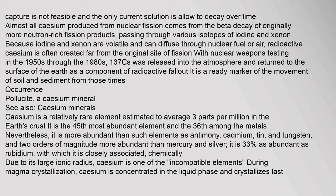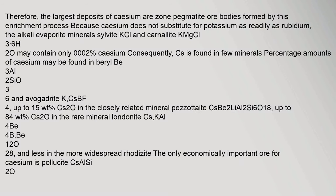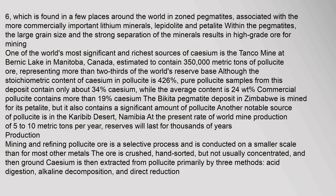Caesium is a relatively rare element. The largest deposits of caesium are in zoned pegmatite bodies formed by an enrichment process. Because caesium does not substitute for potassium as readily as rubidium, the alkali evaporite minerals sylvite (KCl) and carnalite (KMgCl₃·6H₂O) may contain only 0.002 percent caesium. Percentage amounts of caesium may be found in beryl and avogadrite. One of the world's most significant sources of caesium is the Tanco mine at Bernic Lake in Manitoba, Canada, estimated to contain 350,000 tonnes of pollucite.